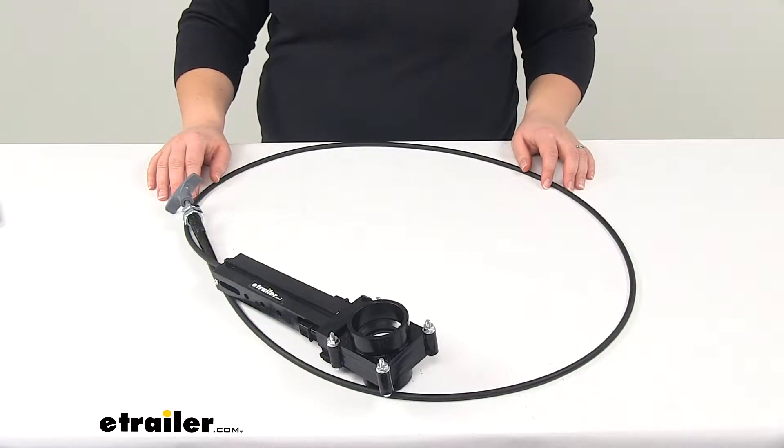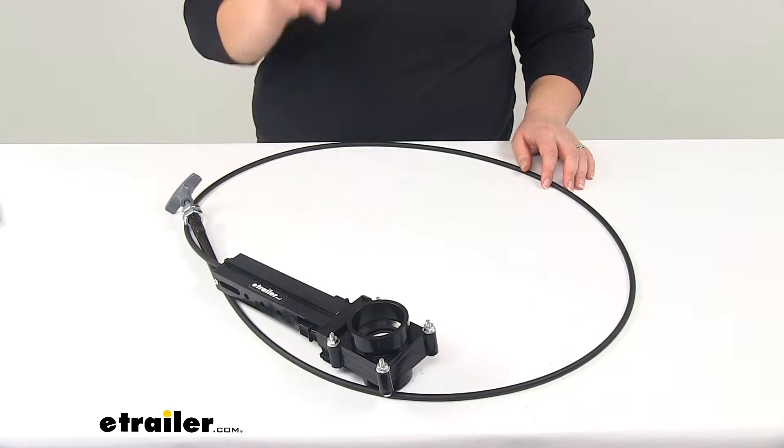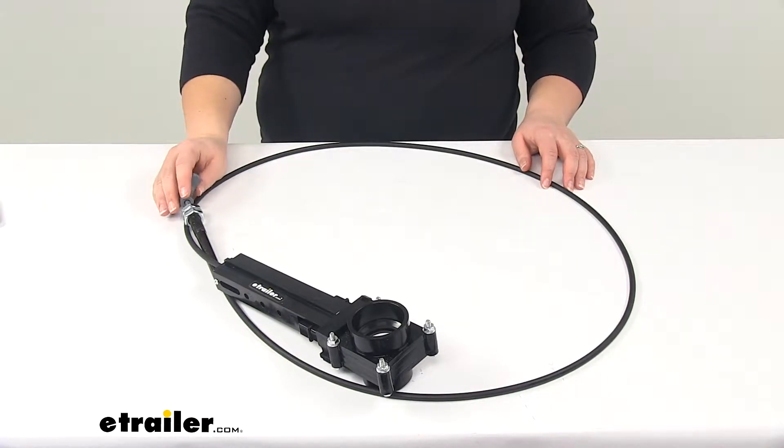Today we're going to take a look at the LaSalle Bristol RV waste valve. This has a one and a half inch diameter. It's going to fit spigot to hub and it has a 72 inch cable.